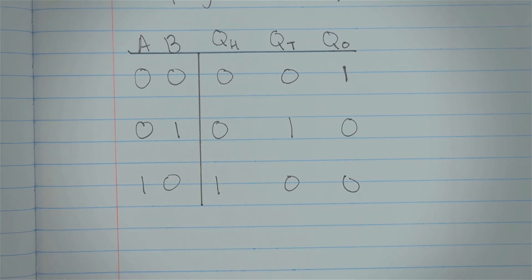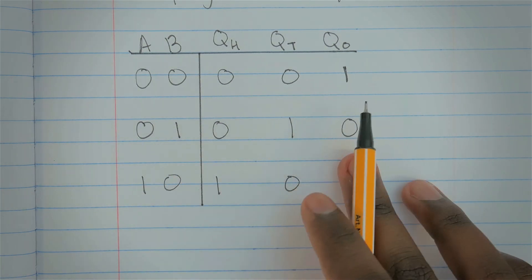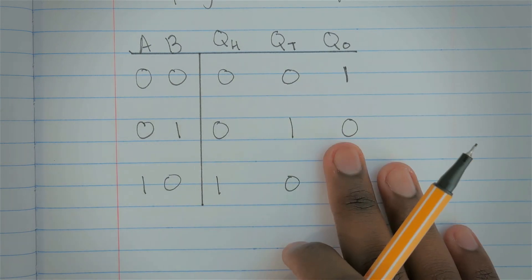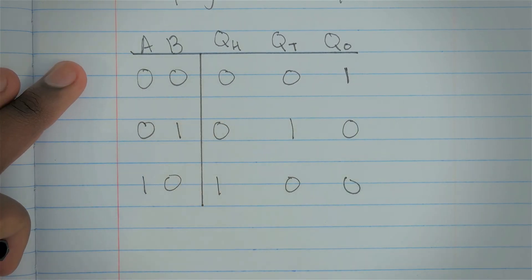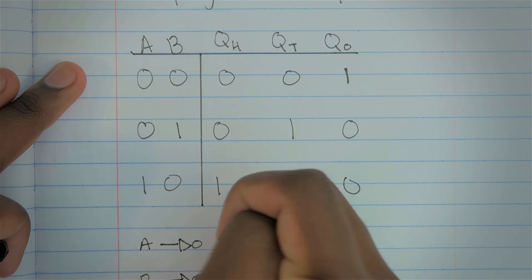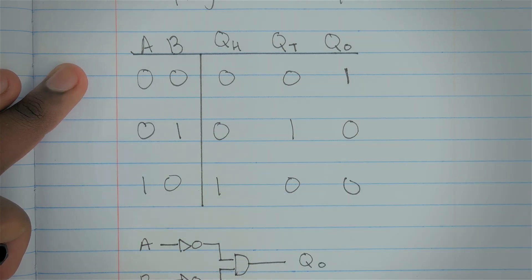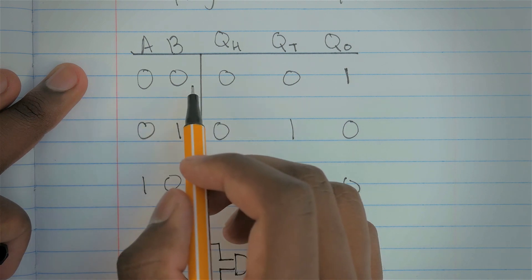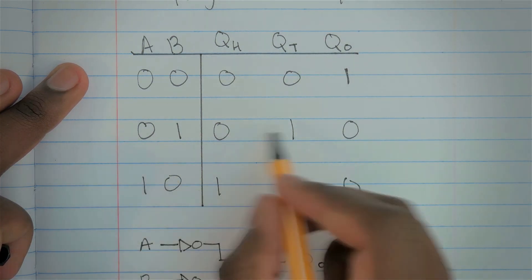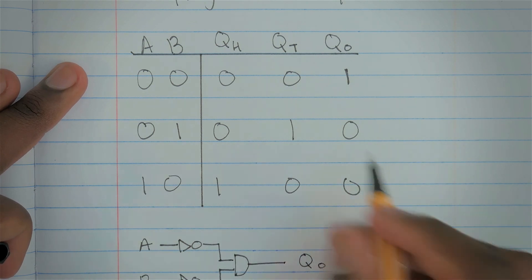You can buy multiplexer ICs, but there's really no point for something this simple — we can design the circuit ourselves. For Q_ones: A and B each go into a NOT gate, then both outputs meet at an AND gate. The only way Q_ones is high is when both inputs are zero-zero, since they get inverted to one-one and the AND gate outputs true.